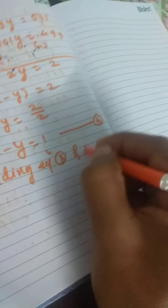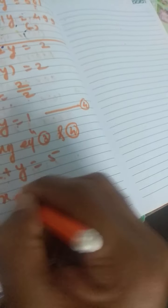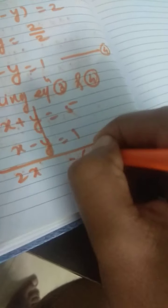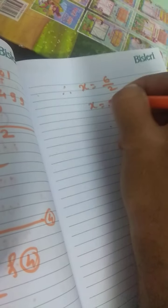Equation 3 and 4: x plus y equals 5, plus x minus y equals 1. The y terms cancel, and x plus x is 2x. 5 plus 1 is 6. Therefore, x equals 6 divided by 2, so x equals 3.